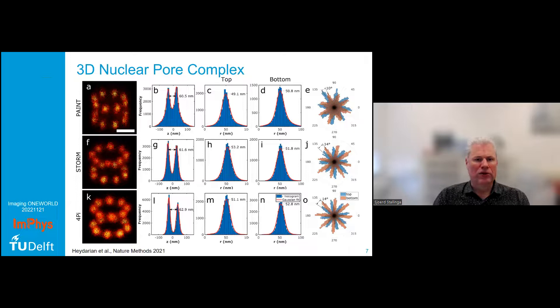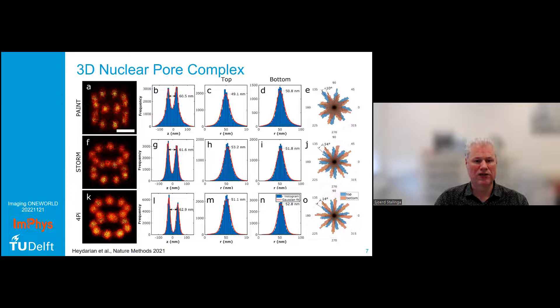We also applied this to 3D imaging. Here you see images of the NPC structure in 3D, where you get two 8-fold symmetric rings. We found agreement in the radius, the height, and also in the phase shift between the top and bottom ring — the rings of eight binding sites are not actually on top of each other, but have a relative rotation of something like 12 degrees.